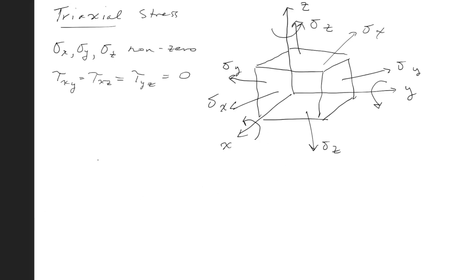And so what this means is you can draw a Mohr circle for triaxial stress by plotting sigma x, sigma y, and sigma z. They're all principal stresses, so they're going to all be on the x-axis.